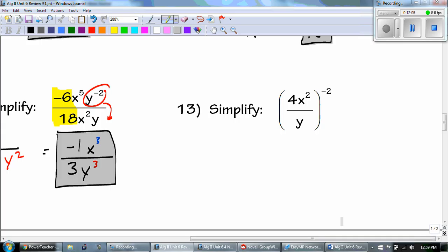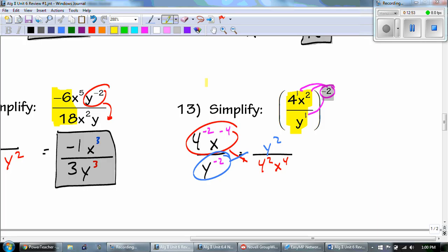And number 13. You always check. Can I simplify the inside first? And since I can't, I need to add a 1. And then I'm going to distribute this negative 2, my little exponent to everything. The bases stay the same. 1 times negative 2 is negative 2. 2 times negative 2 is negative 4. And 1 times negative 2 is negative 2. So if my exponents are negative, I drop them like they're hot. If they're already on the bottom, we bring them to the top. The only thing that I can still do is 4 squared because I know that 4 squared is 16. So we get y squared over 16x to the 4th.